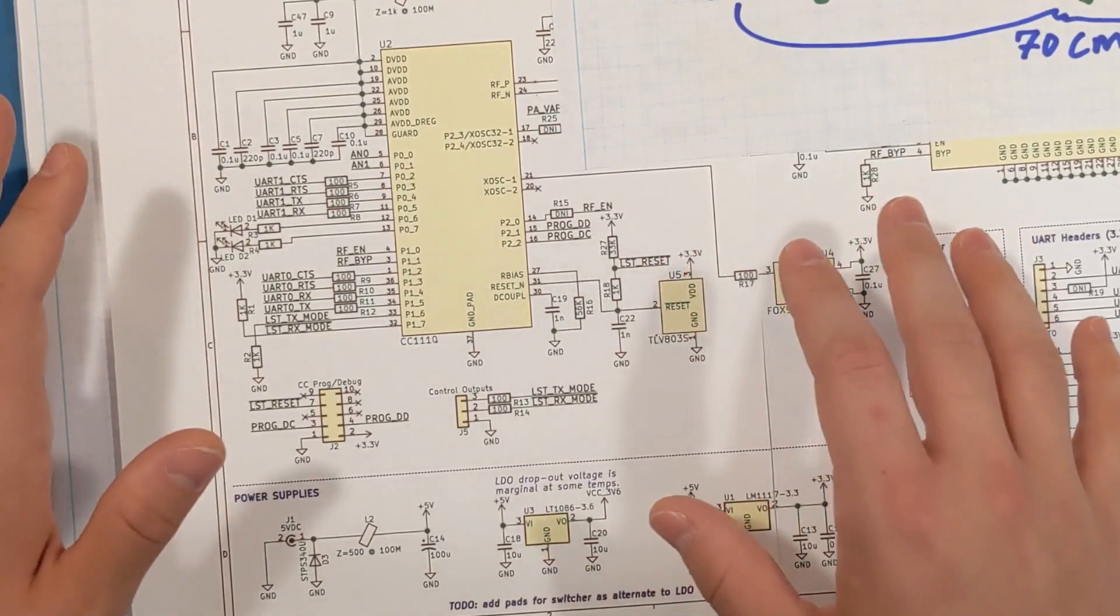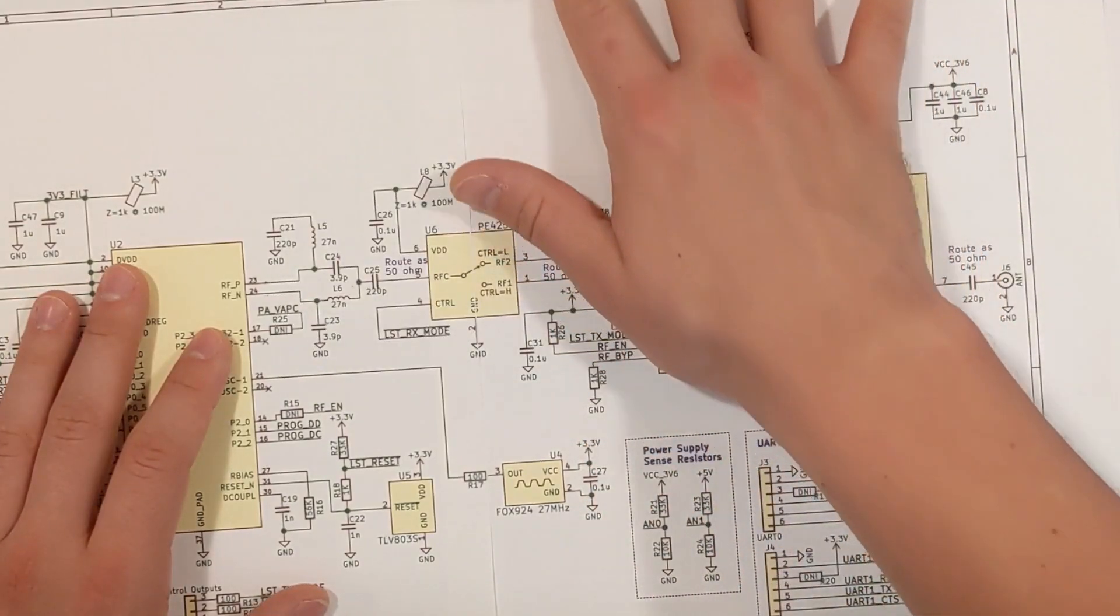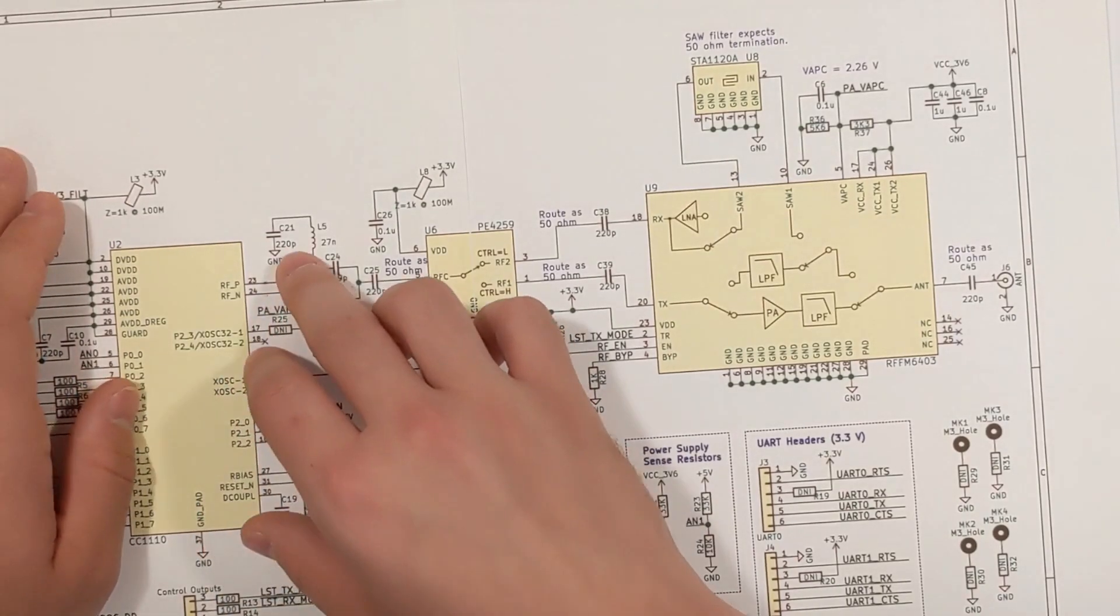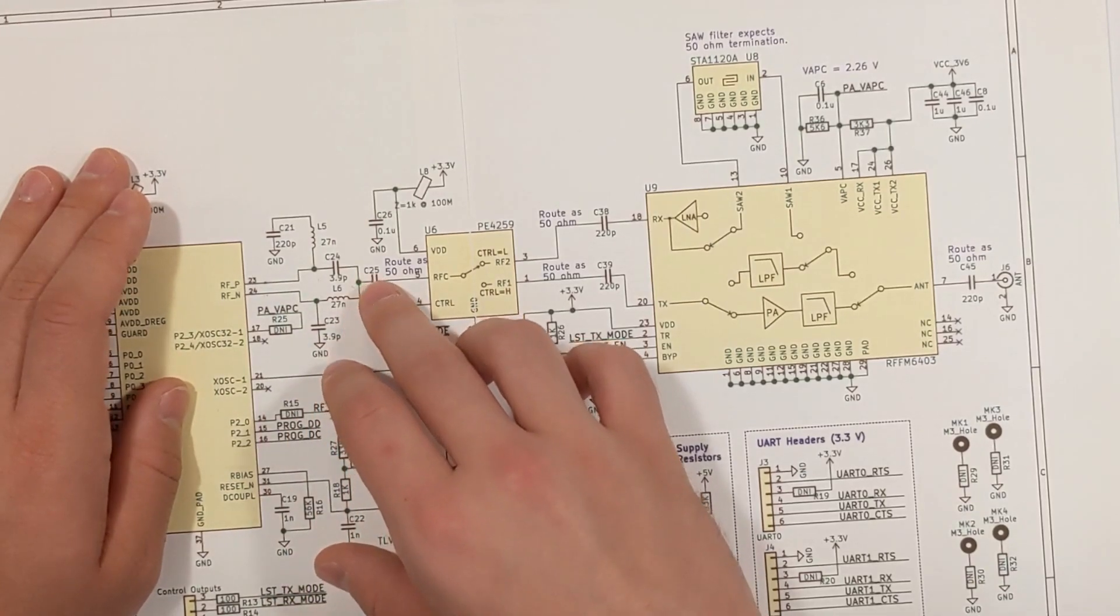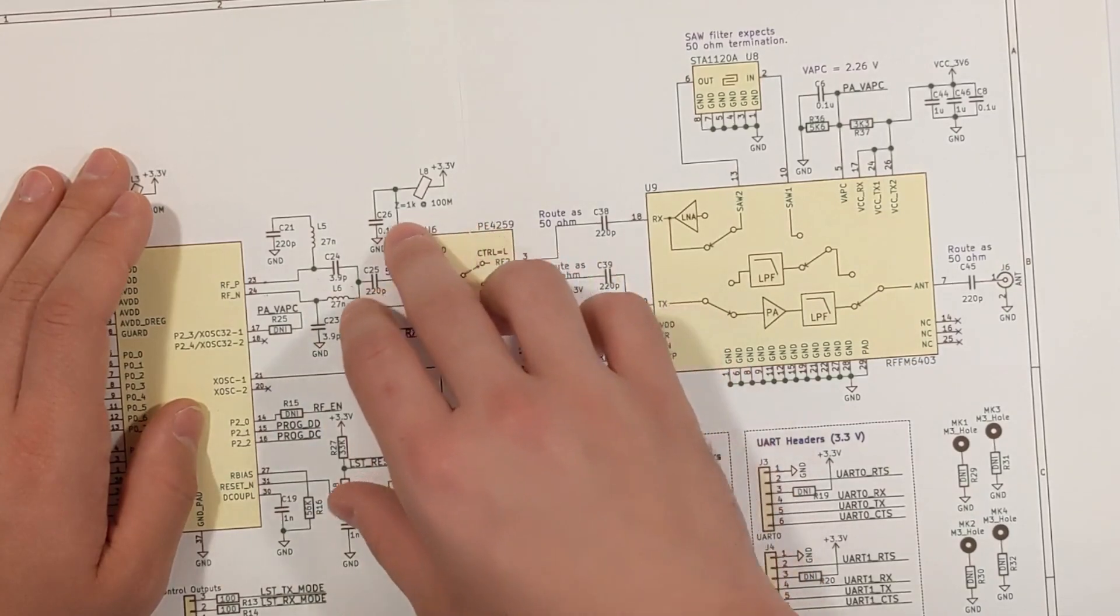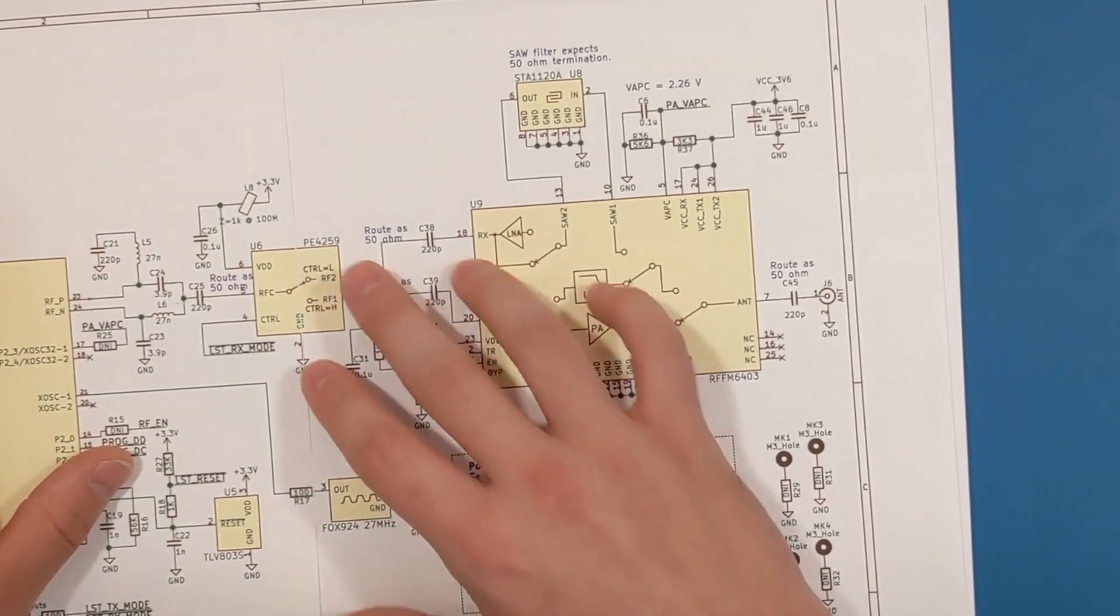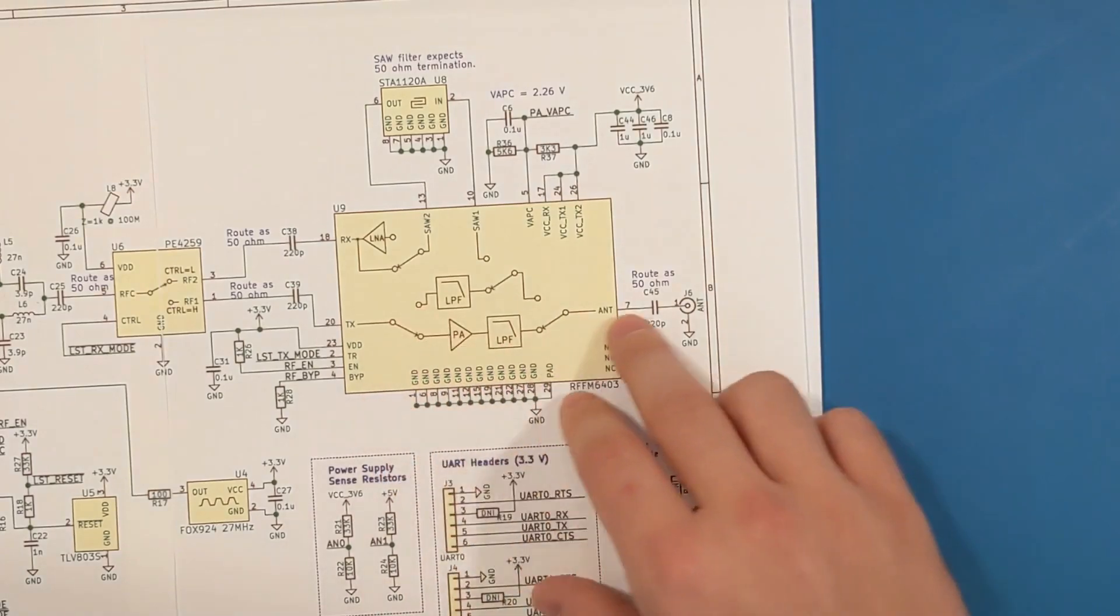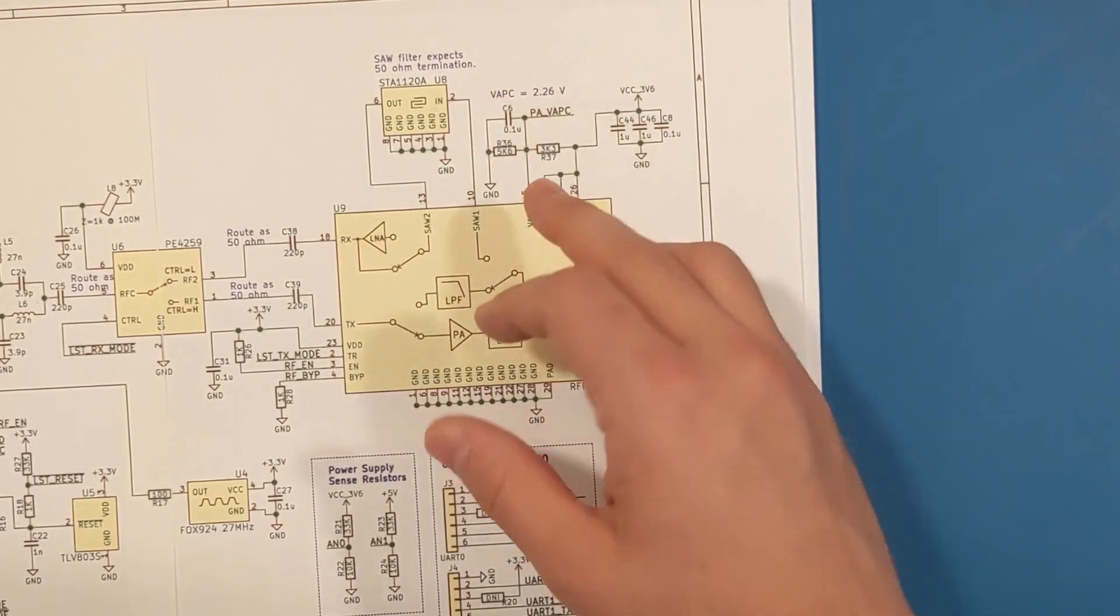So now let's look at the actual RF section. We have essentially five components. Starting from the CC1110, we have a pair of balanced differential signals which goes into this first part which is a balun converting the balanced signal into an unbalanced RF signal. We then have an RF switch which switches between the transmit and the receive paths. These paths go into the RF front end here, which has a power amplifier for the output and a low noise amplifier for the input, along with this SAW filter up here which is part of the input receiving path.